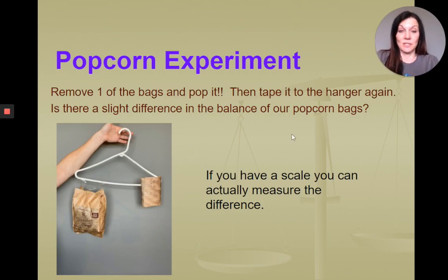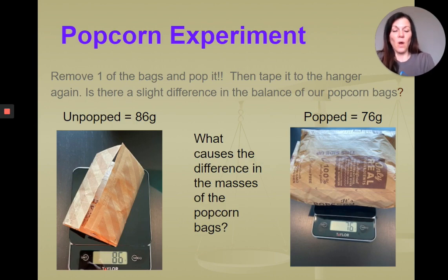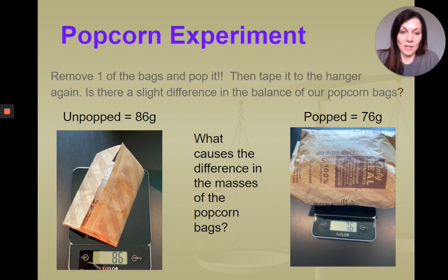If you have a scale, which I happen to have, you can actually measure the difference. When measured, you can see that our unpopped bag of popcorn weighs 86 grams, and that our popped bag of popcorn weighs 76 grams. What could be the possible reason for the differences in the masses? In this case, some amount of our mass had to escape. And when you pop popcorn, you'll notice that steam escapes from our bag.